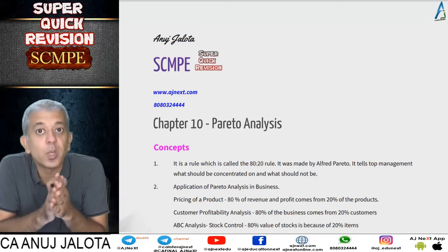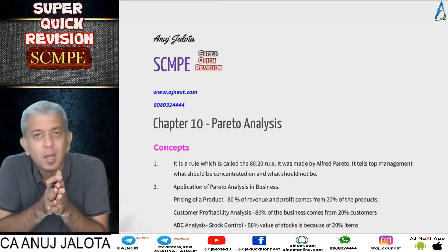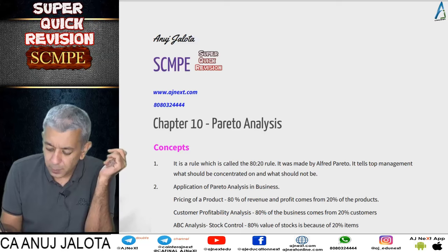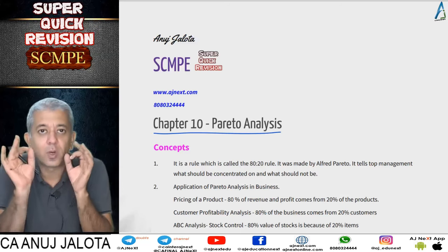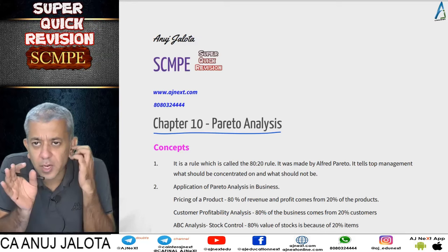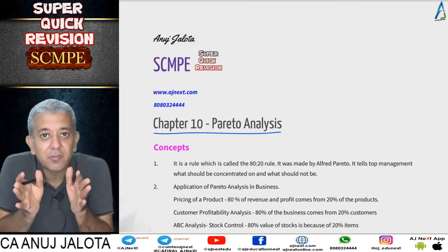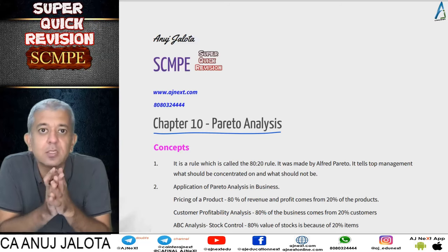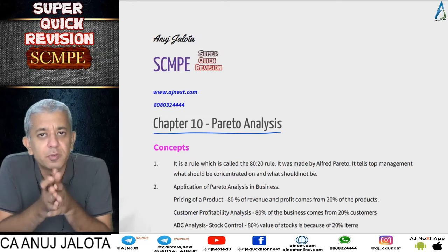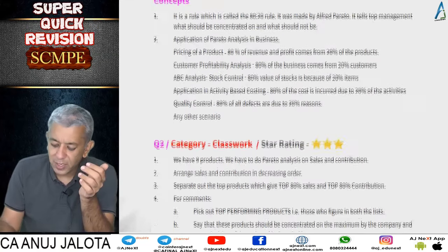Hi guys, welcome back to a super quick revision of Pareto analysis. That chapter was quite small, so this revision will also be small. Pareto analysis is only about one thing: what is important and what is not. Top management has limited time, so they try to devote it only towards things that are material and important. A gentleman called Alfred Pareto observed that 80% of the world's wealth is in the hands of 20% of people — this is also called the 80-20 rule.